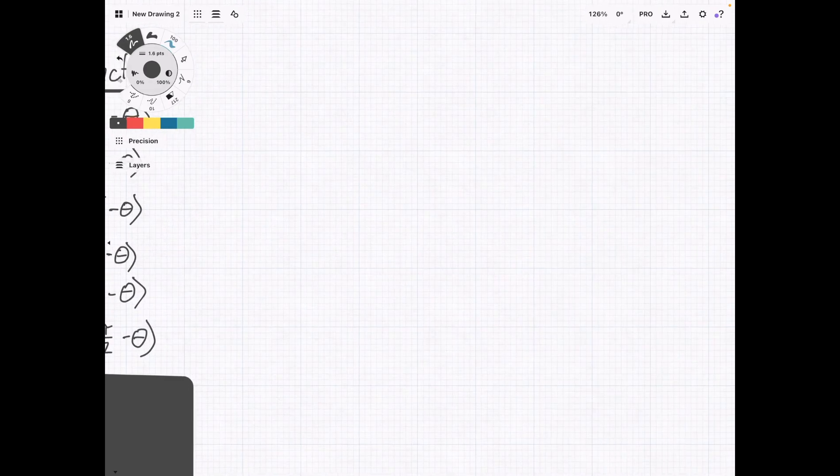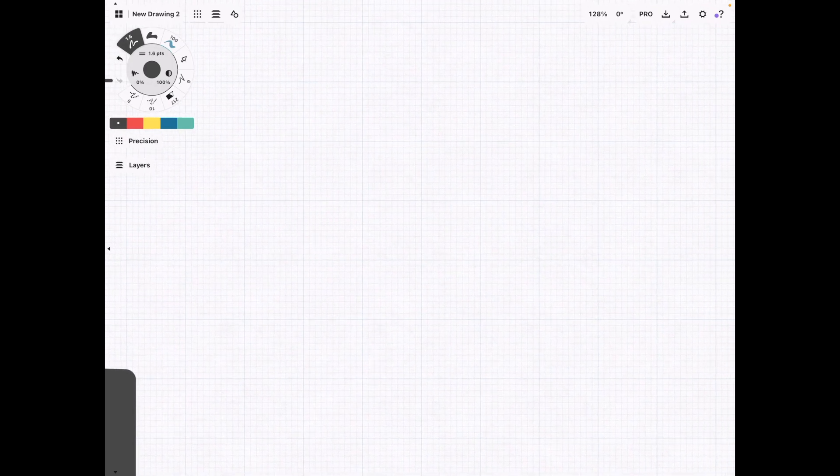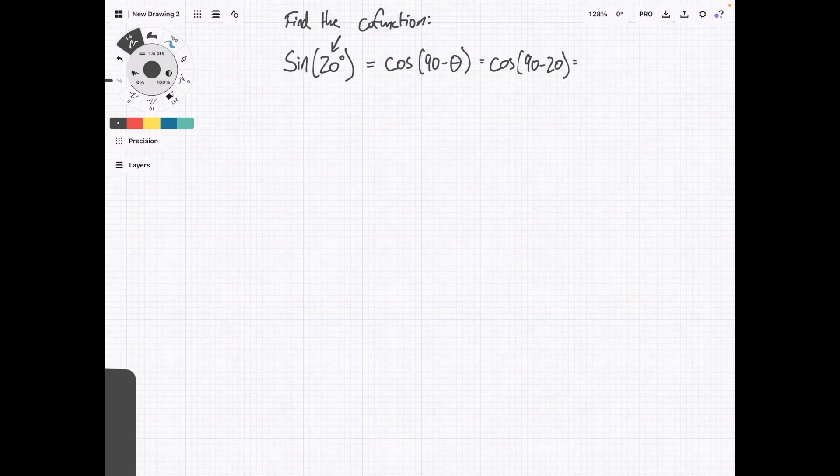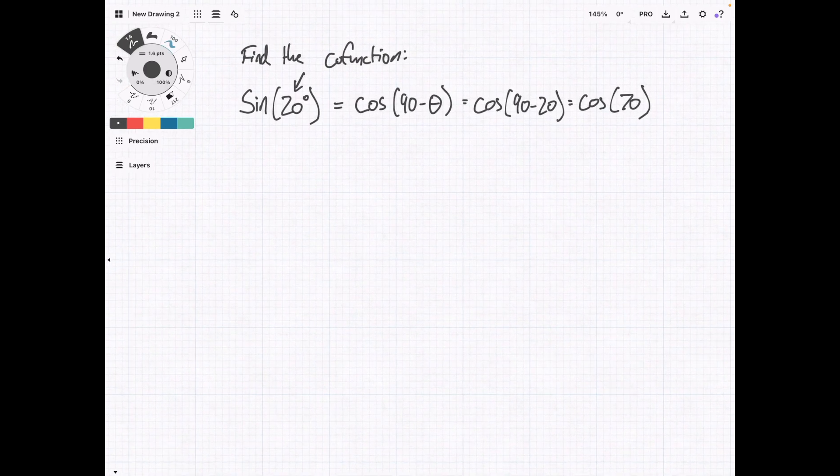Now what we're going to do is run through a few examples. To start off, we're going to say sine of 20 degrees and we want to find this co-function. Okay, so this is going to equal, if we reference back to the table before, cosine of 90 minus theta. This is theta. So cosine 90 minus 20 equals the cosine of 70. I know I'm dragging this out, but mostly just doing it to really drive home what we're doing here.